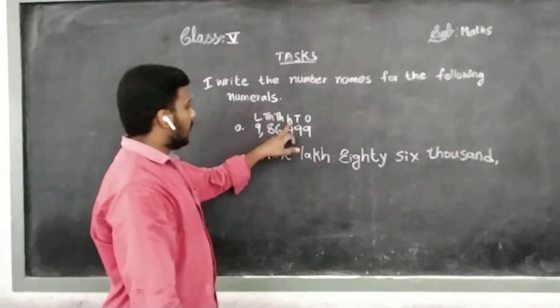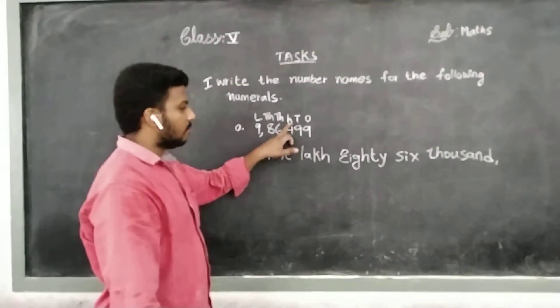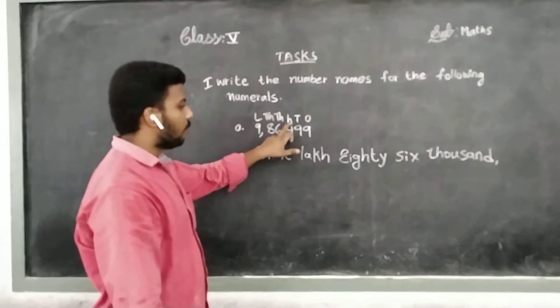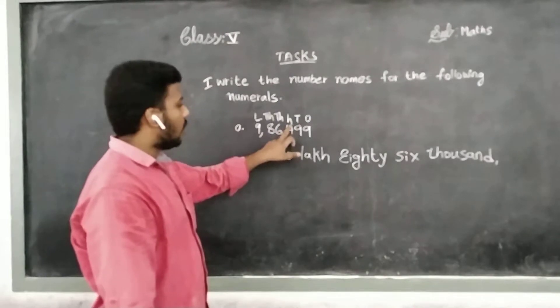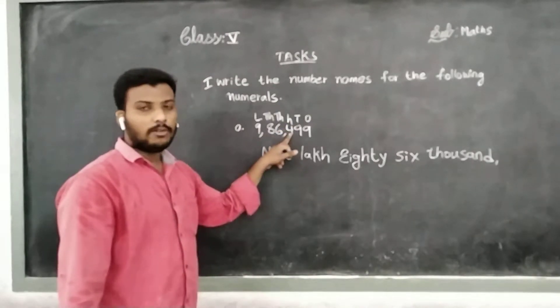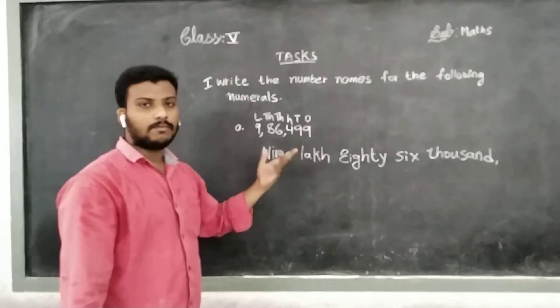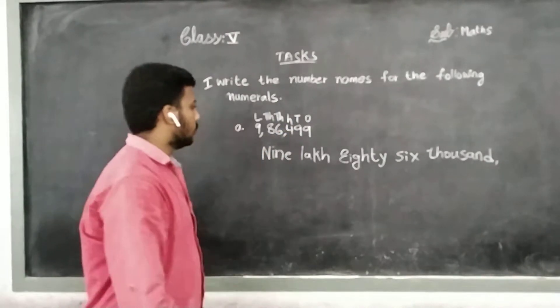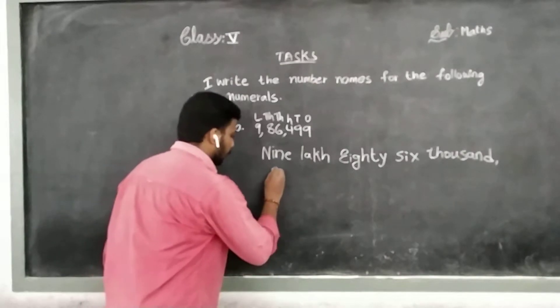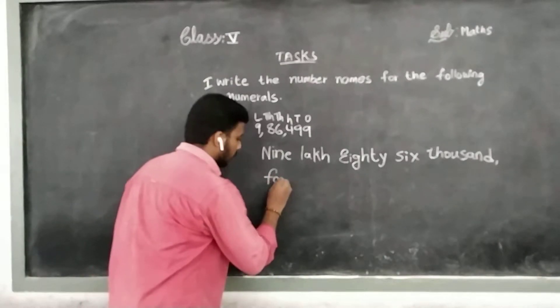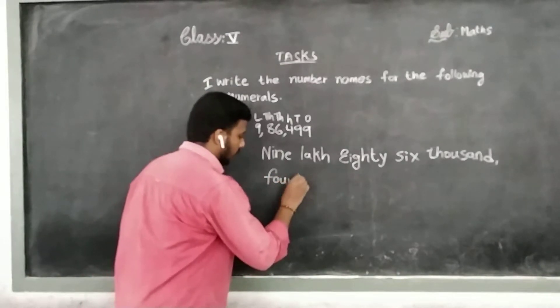Then, see children, in the place of hundreds. In the place of hundreds, we have the value 4. 4 into 100 — how much? 400.